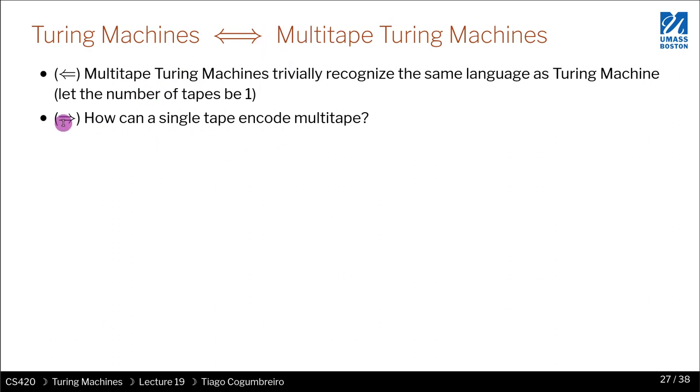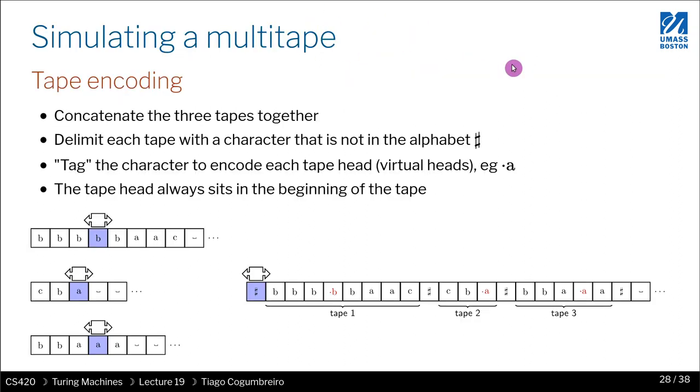And the other direction is not as easy. Let's see what is the intuition of the proof. So how could we design a Turing machine that is able to simulate a multi-tape Turing machine? So what we need to do is we need to encode the multiple tapes in my single tape. How do I do that?